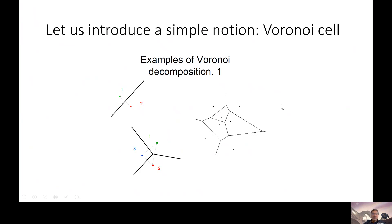A Voronoi cell is a decomposition of a space — it can be two-dimensional or n-dimensional — into regions such that the points in each particular region are closest to one particular selected point. For example, if you have two points in two-dimensional space, you plot the line between them, find the midpoint, and draw a perpendicular. Any point on one side is closer to point one, and any point on the other side is closer to point two.